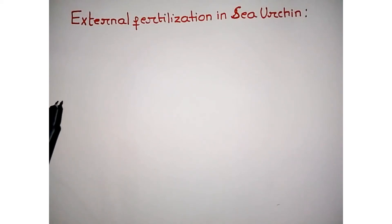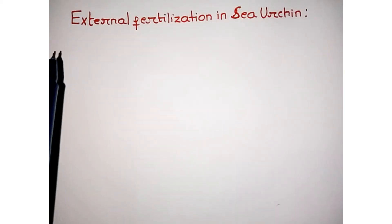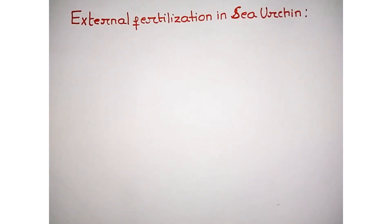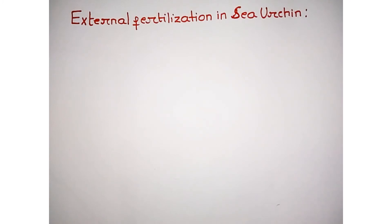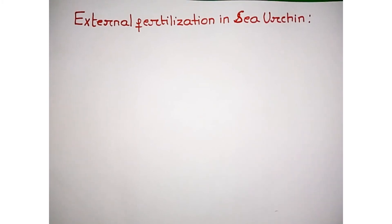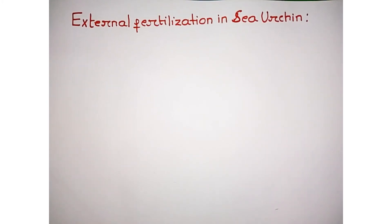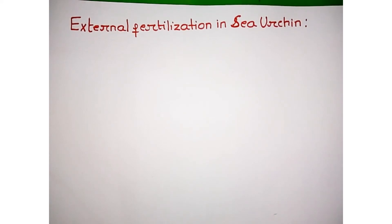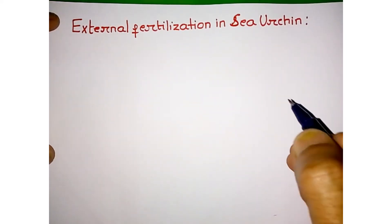Today we discuss the topic of external fertilization in sea urchin. Sea urchin shows external fertilization. In the case of external fertilization, the gametes are released into the aqueous environment and ultimately fusion of sperm and egg occurs. There are several steps involved in external fertilization in sea urchin. We will understand it with the diagram.